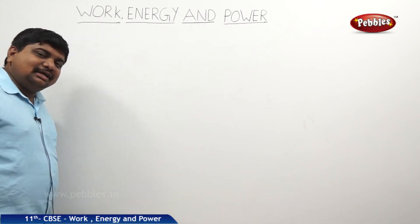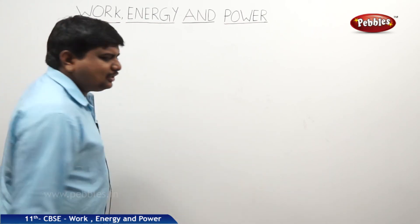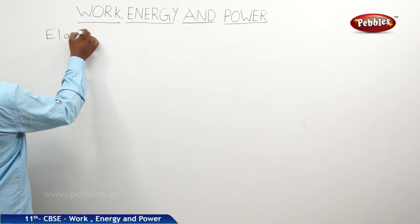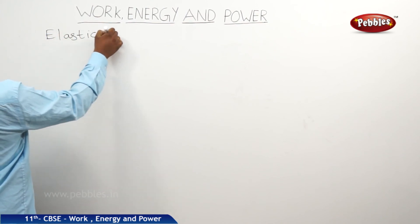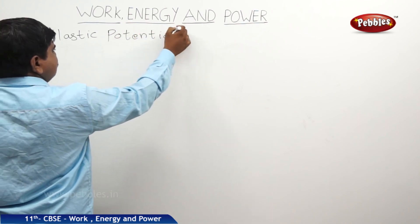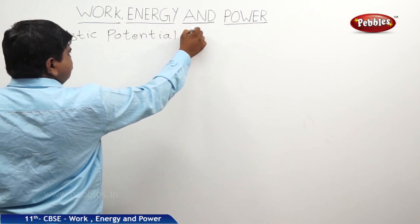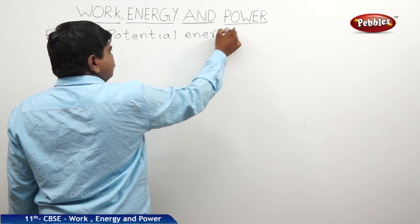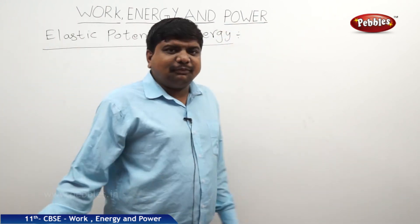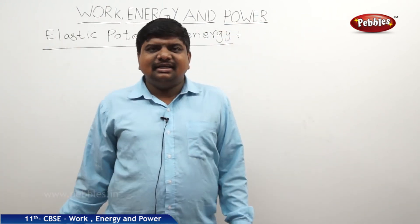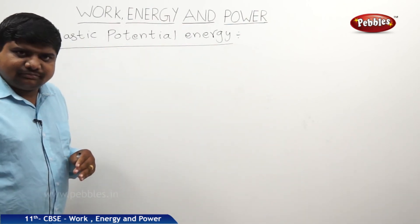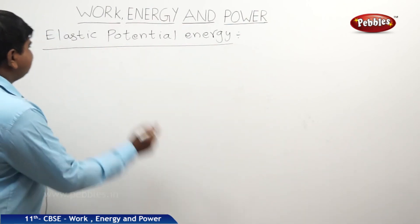Next we will see the expression for elastic potential energy. To derive elastic potential energy, we should take an elastic body to execute the energy. So, let us take a spring.